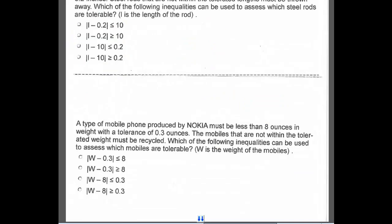A type of mobile phone produced by Nokia must be less than 8 ounces in weight with a tolerance of 0.3 ounces. The mobiles that are not within the tolerated weight must be recycled. Which of the following inequalities can be used to assess which mobiles are tolerable? W is the weight of the mobiles.